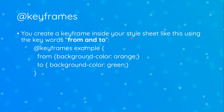You create a keyframe inside your stylesheet using the keywords from and to. You declare @keyframes and then give it a name — the name can be anything you want. In this case we're calling it 'example', but you'd want to call it something similar to what you're going to be changing. So we want to animate the background color from orange to green. That's how you create a simple keyframe.